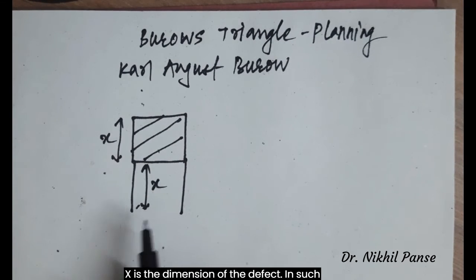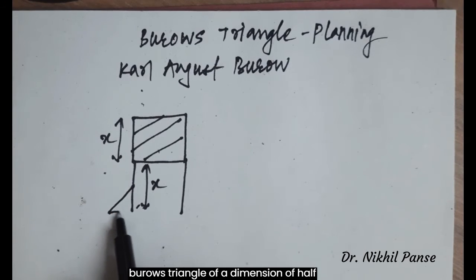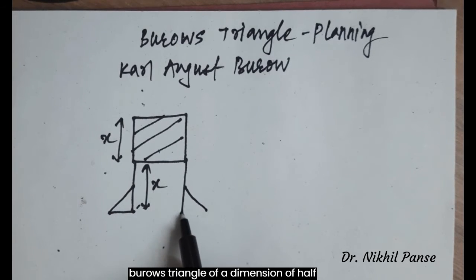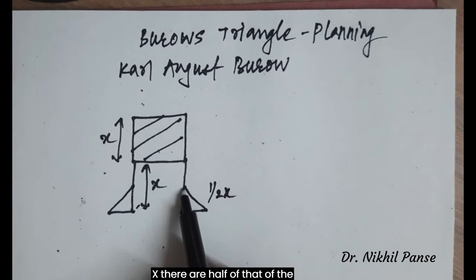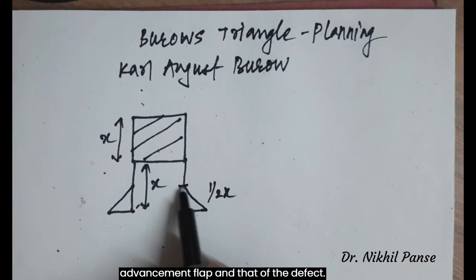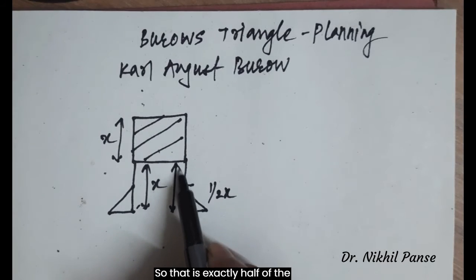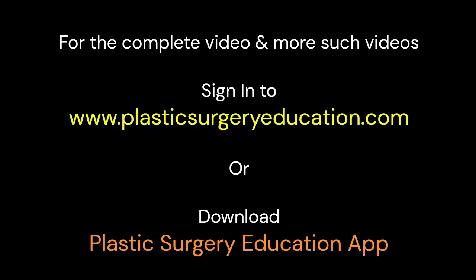In such cases, when there is significant laxity, Burroughs triangles are of a dimension of half x. They are half of that of the advancement flap and that of the defect — so exactly half of the advancement flap.